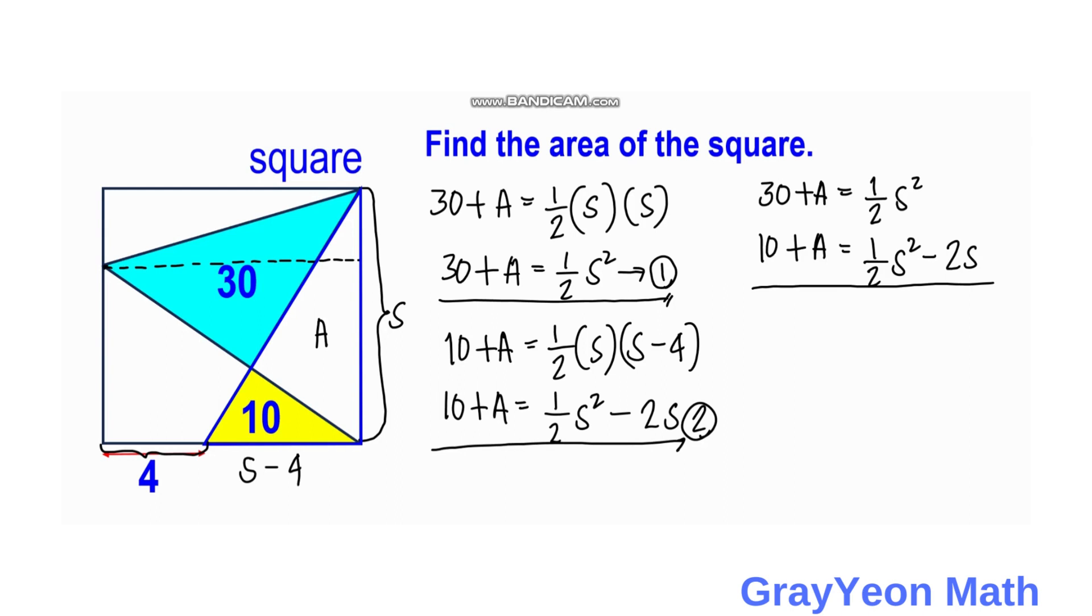To solve this system of linear equations, we subtract equation 2 from equation 1. This gives us: 30 - 10 = 20, A - A cancels out, 1/2 S² - 1/2 S² cancels out, and we have 0 - (-2S) = 2S. Therefore, 20 = 2S. Dividing both sides by 2, we get S = 10 units.